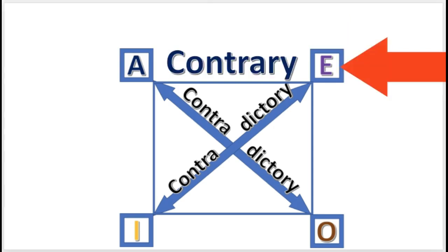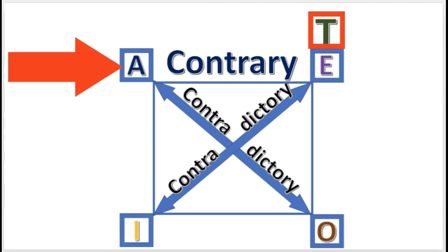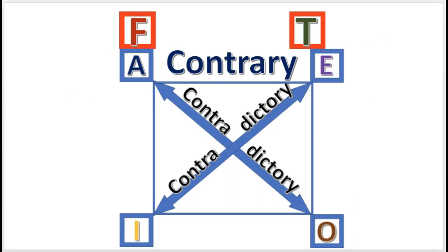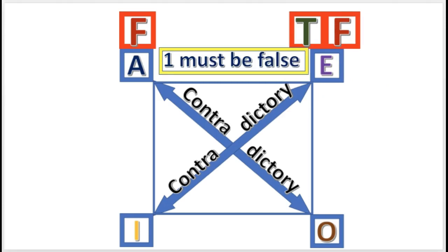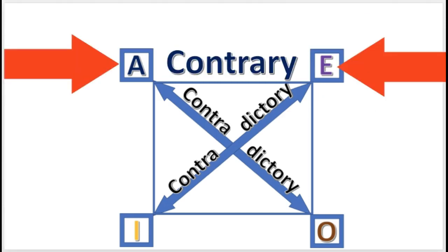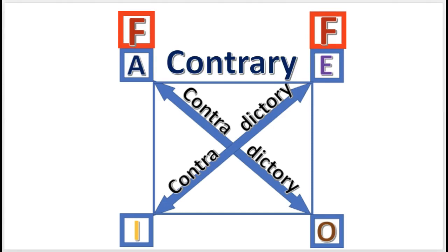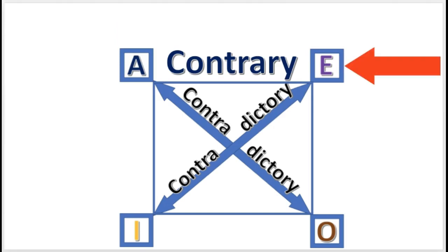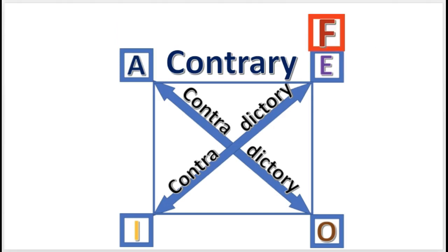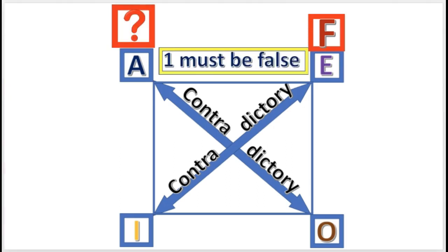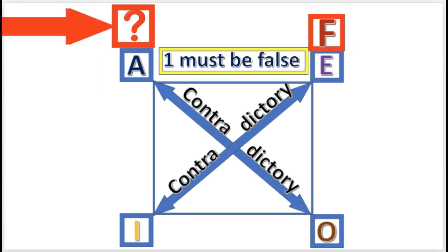And likewise, if the E is true, then the A is false. But if the A is given as false, the E could be either true or false, because the rule only says that at least one is false — they very well could both be false. So the E has undetermined truth value. Similarly, if the E proposition is given as false, then the A has undetermined truth value. At least one must be false, and one is already given as false, so the other one could be either true or false.